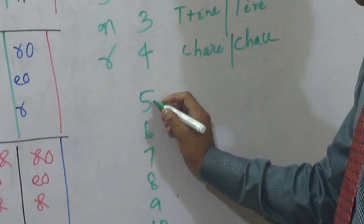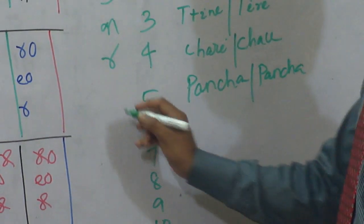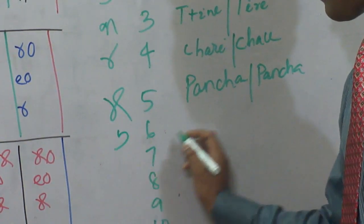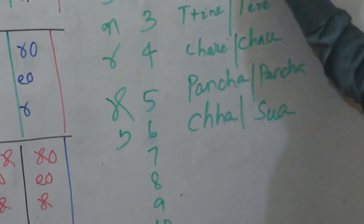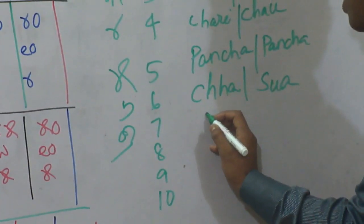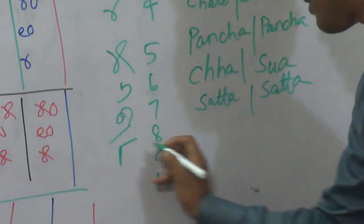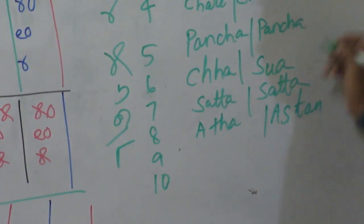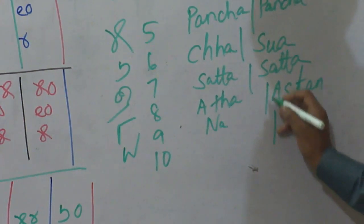We call five as 'pancha'. This is six, we call it 'chha' or 'suha' — it is for the table. This is seven: 'sata'. You can say 'sata'. This is eight: 'athha' or 'ashta'.